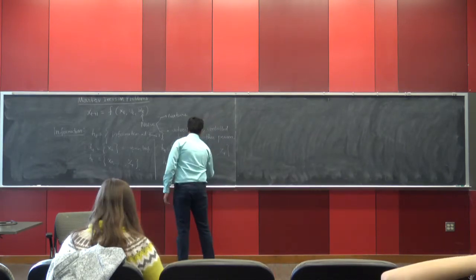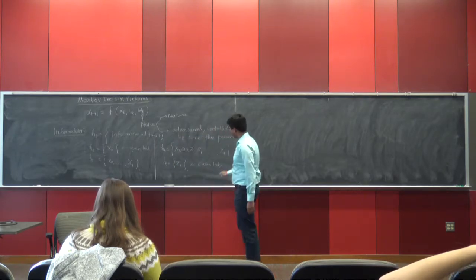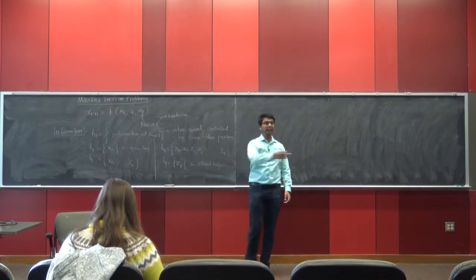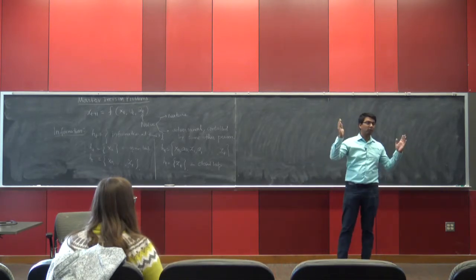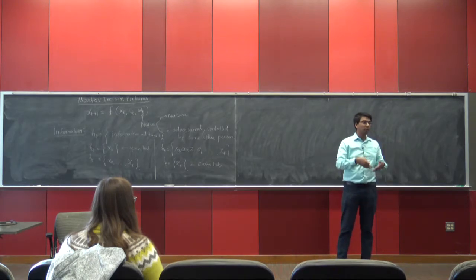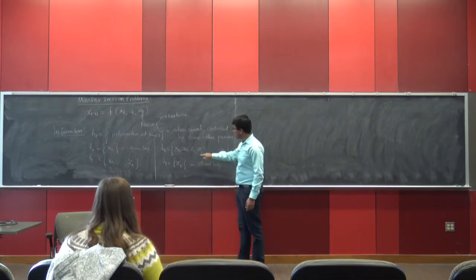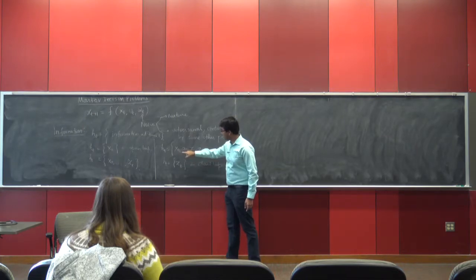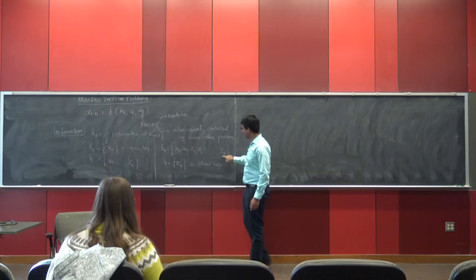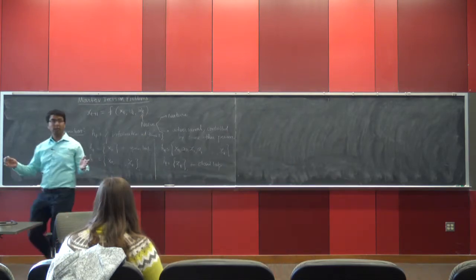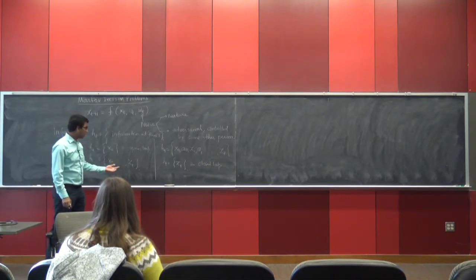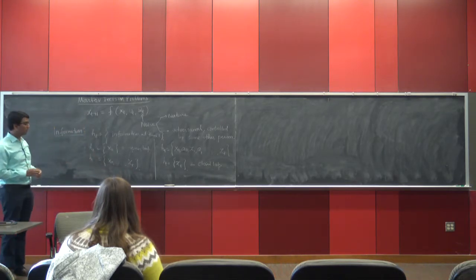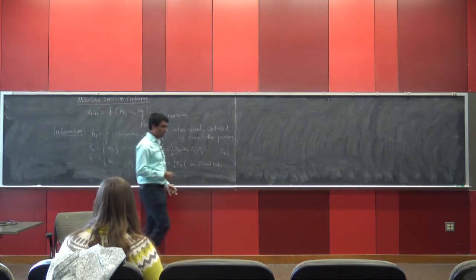In open loop you only have x_0; in closed loop you have just the instantaneous state and have forgotten the entire history. The full history case means you remember every state visited and every action taken. You could also remember the trajectory of states but not the past actions. So you could define information in multiple ways in this stochastic problem.